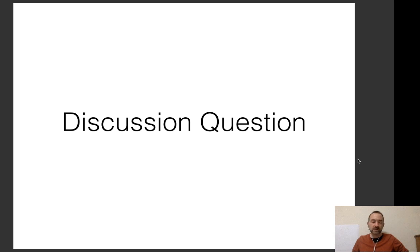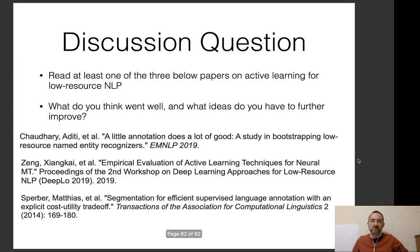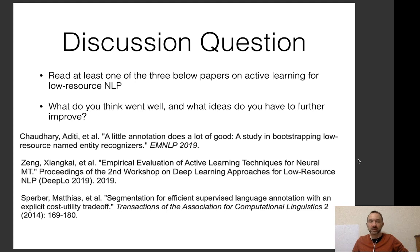That's all the content for today. For the discussion question, we'll go deeper into referenced papers: the first on cross-lingual transfer learning plus active learning; the second on evaluation of multiple active learning techniques for neural machine translation; and the final one on cost-sensitive active learning. Looking forward to the discussion in class.